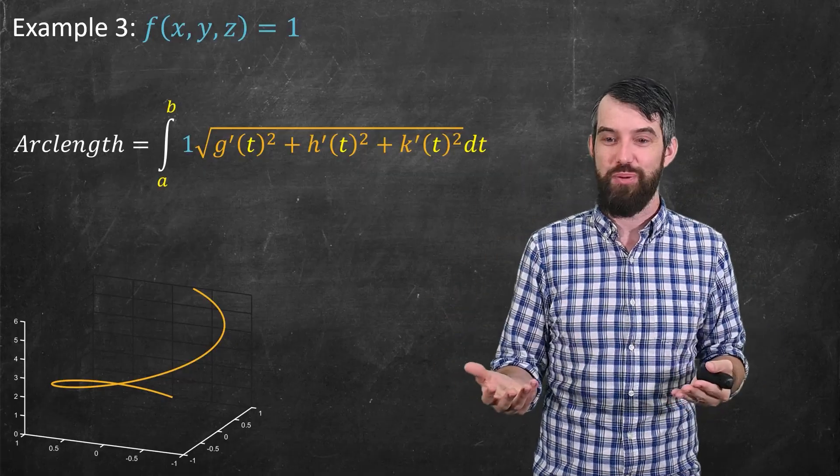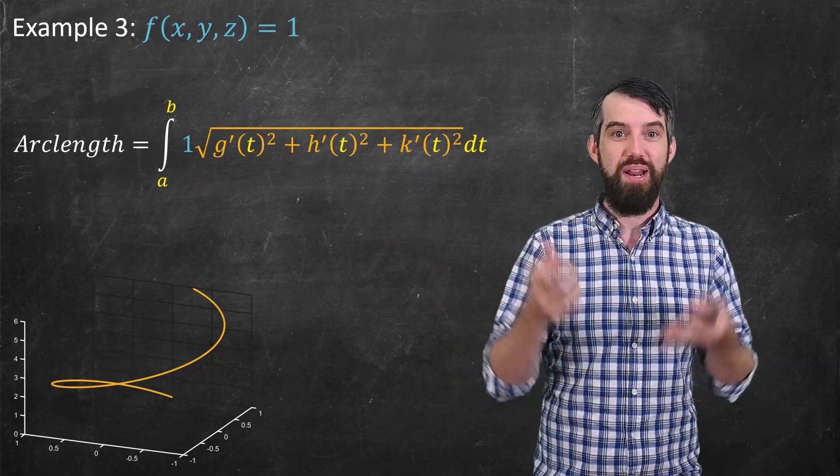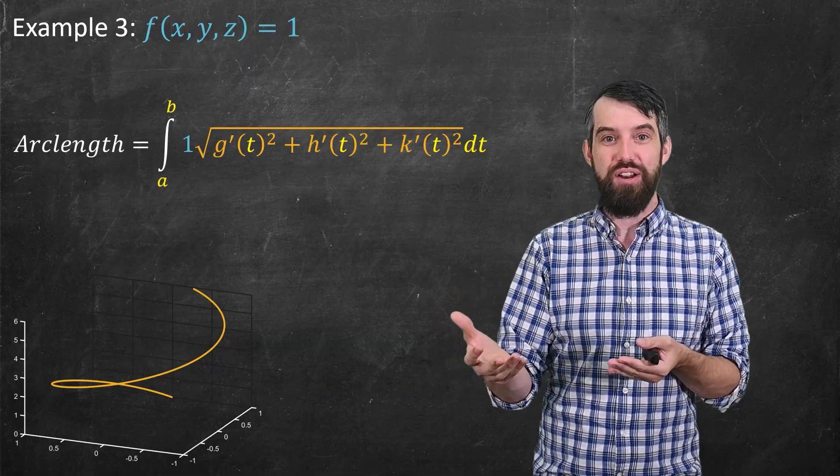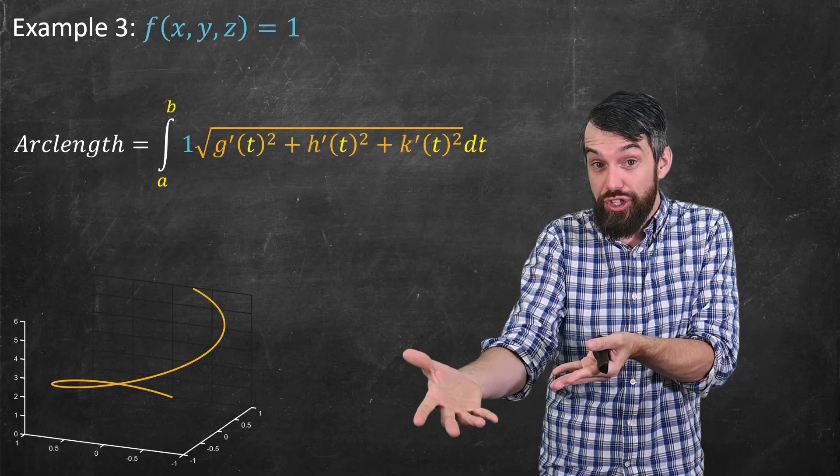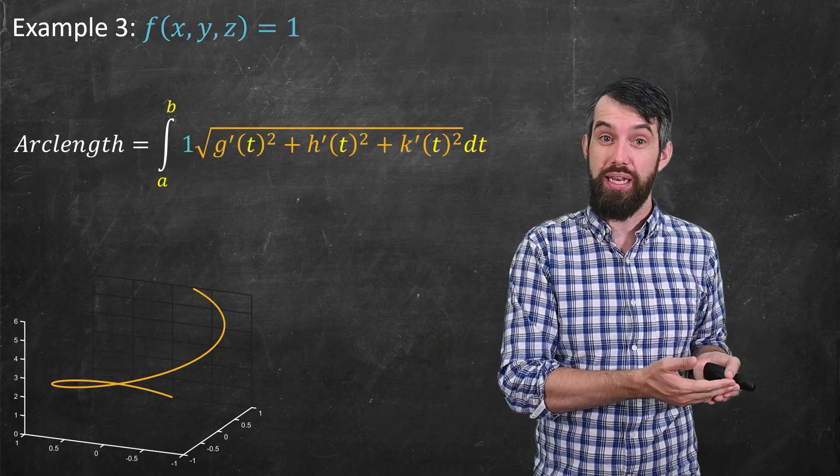And it makes sense, because you're basically just taking the arc length thing, the square root of all that stuff, and then multiplying it by 1, so of course you just get out the arc length again. And so it's a bit silly, but I can interpret line integrals as sort of a generalization of the arc length formula we've seen back in multivariable calculus.